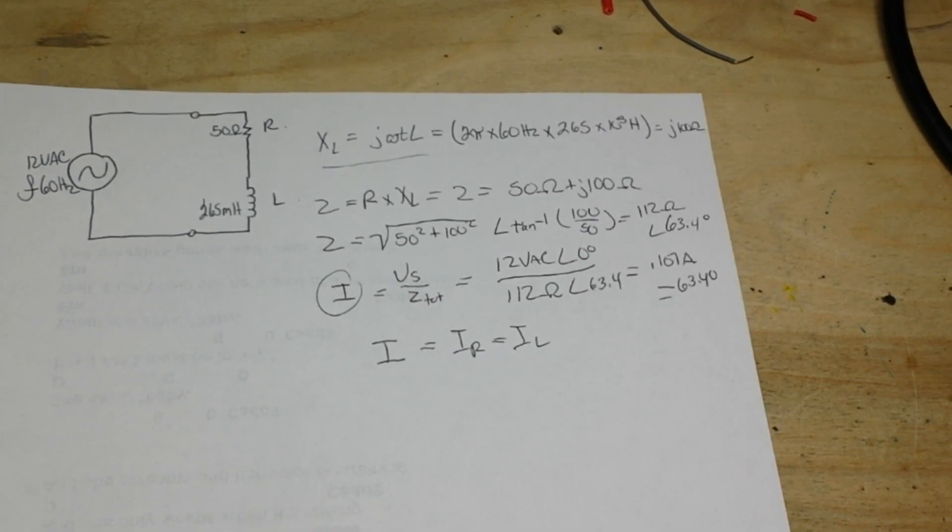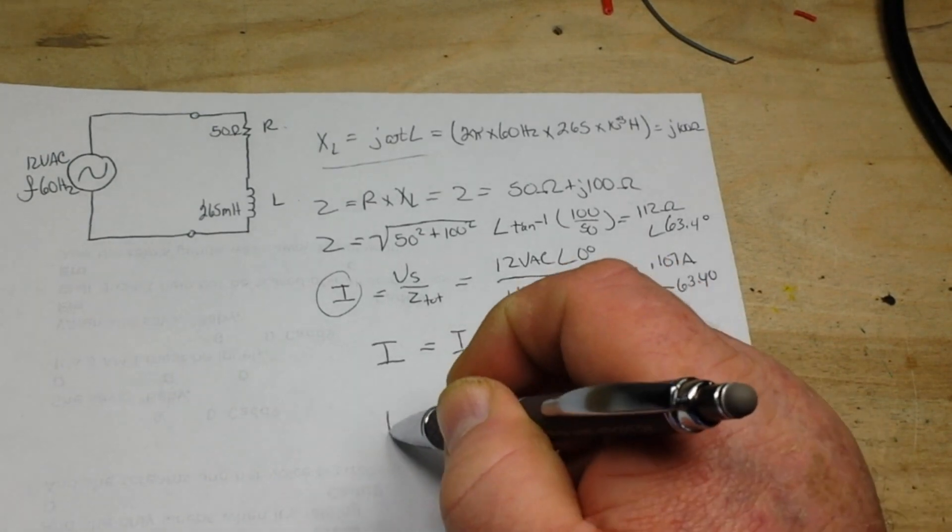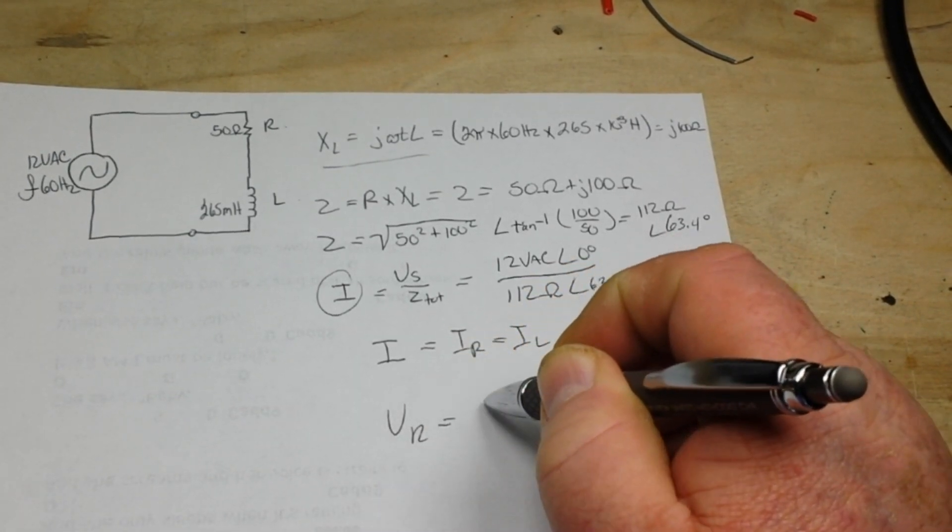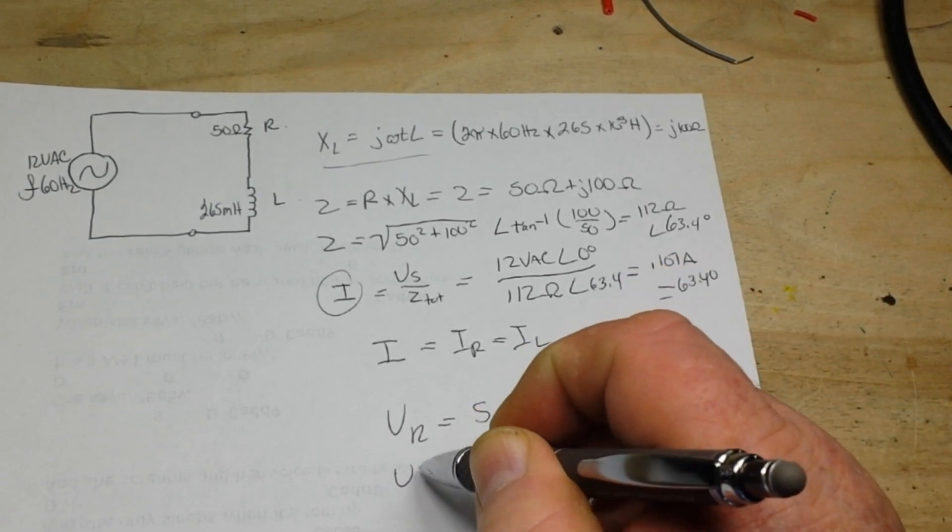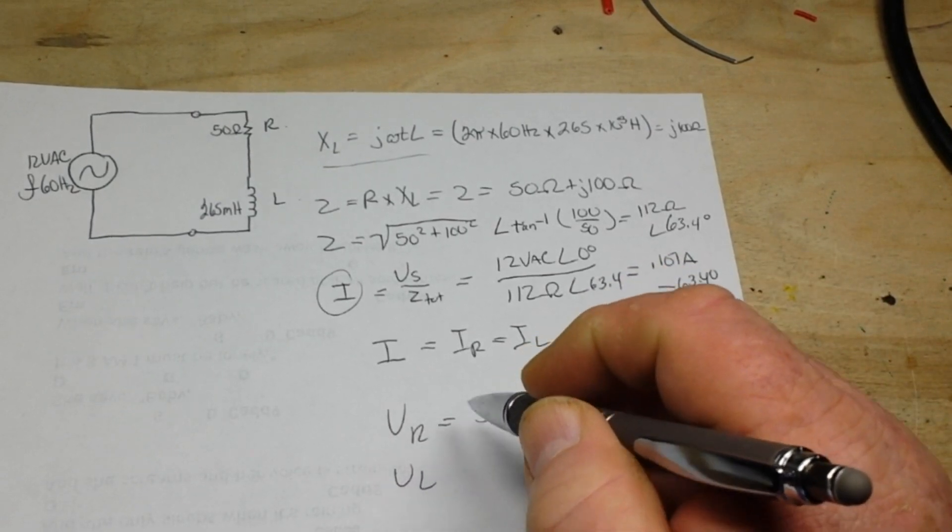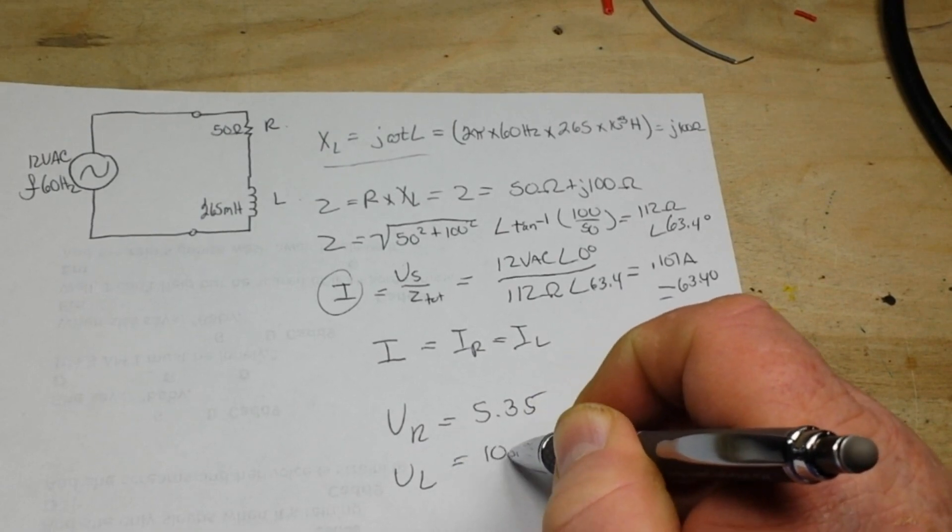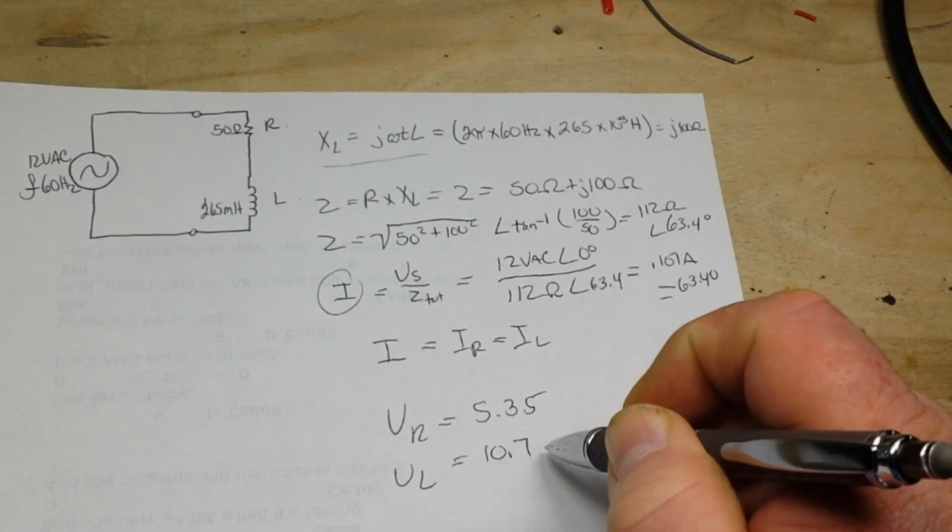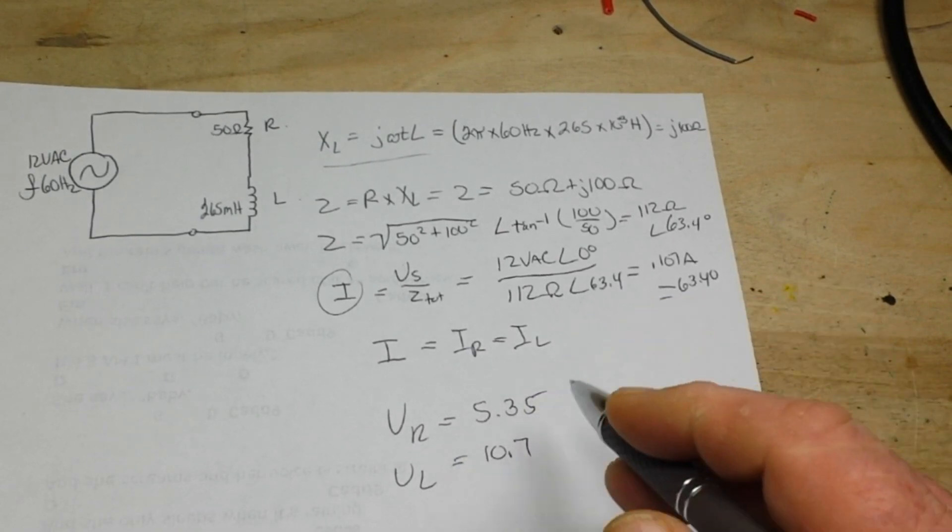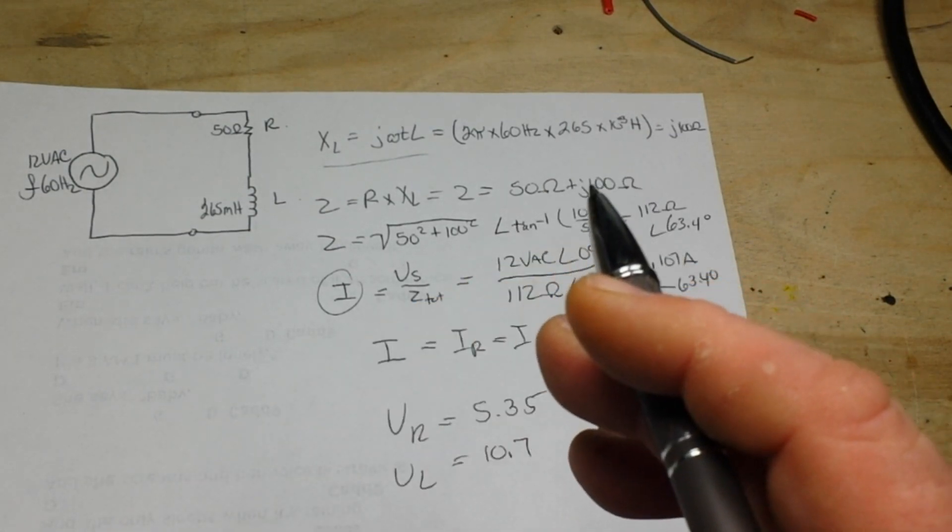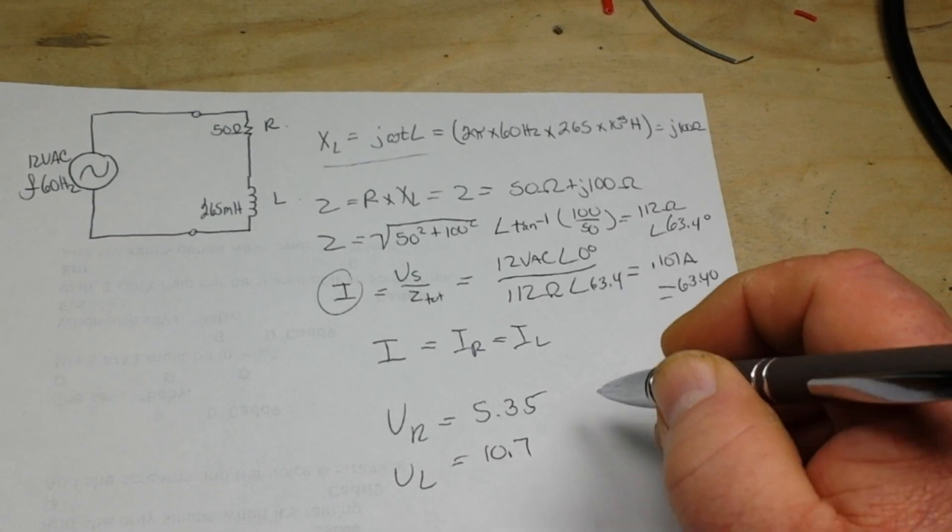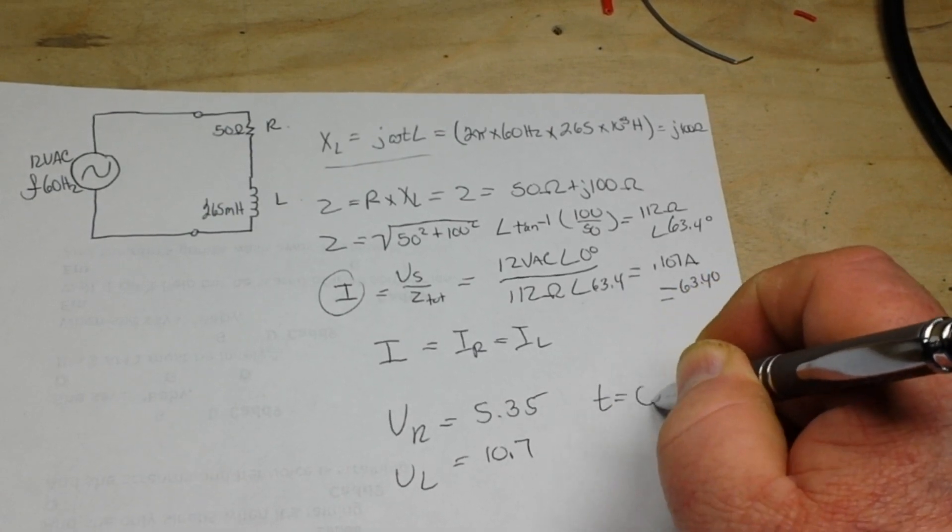The voltage over the resistor is equal to 5.35 volts, and the voltage over the inductor is equal to 10.7 volts. The phase angle is going to change here. Now this was for only an instant in time, so T equals 0.